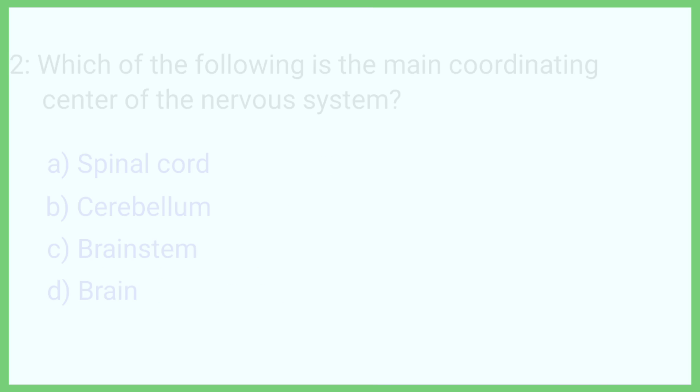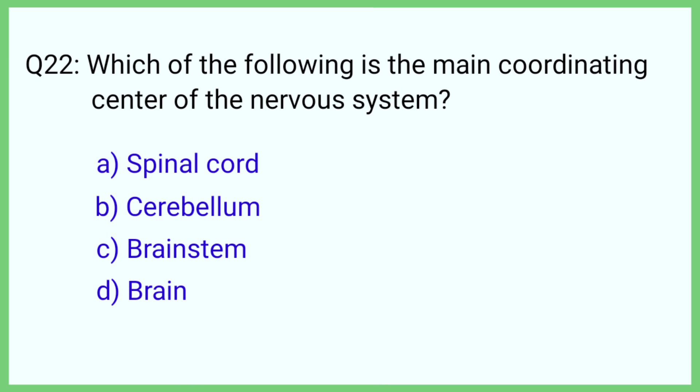Question number 22. Which of the following is the main coordinating center of the nervous system? The correct answer is option D: Brain.